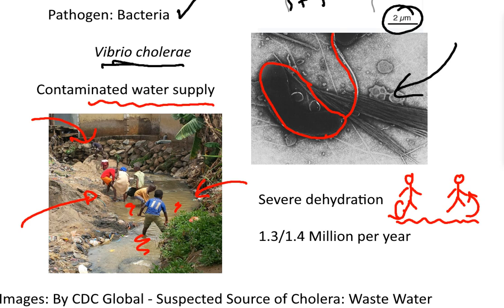Cholera causes about 1.3 to 1.4 million infections a year. It results in severe dehydration through largely diarrhea or possibly vomiting. The dehydration is so severe in some cases that it is lethal — it can actually kill you. So the disease, cholera, is caused by Vibrio cholerae.